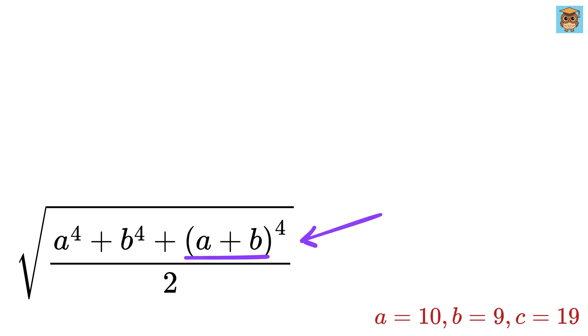Now we use an expansion formula for this, which says A plus B whole to the 4 is equal to A to the 4 plus 4 times A cubed times B plus 6 times A squared times B squared plus 4 times A times B cubed plus B to the 4.